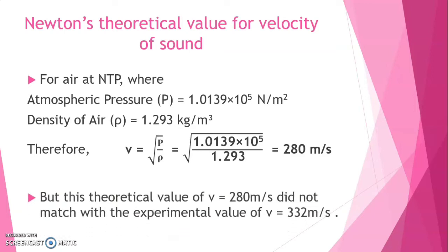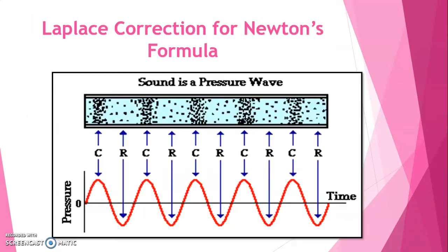But, this theoretical value of velocity V equals 280 meter per second did not match with the experimental value of velocity V equals 332 meter per second. Due to this large difference between theoretical and experimental values shows that Newton's formula is incorrect for sound medium.